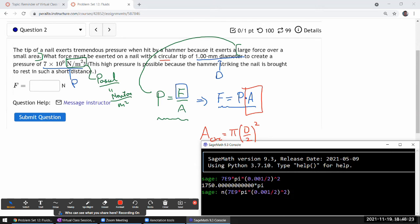So it will just plug in 3.14 for pi and just give me a decimal number that I can put into the answer thing there. Okay, 5498 newton.